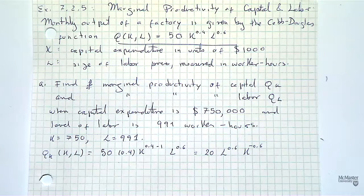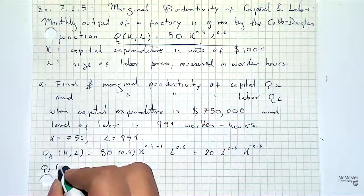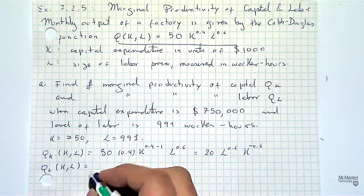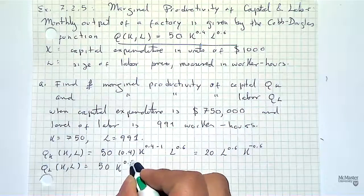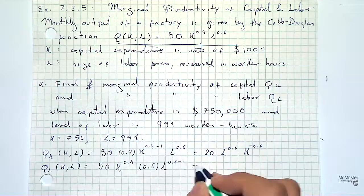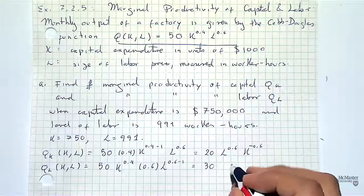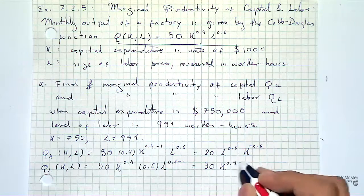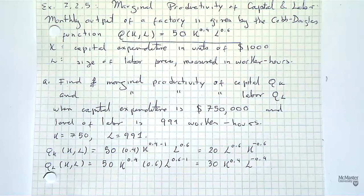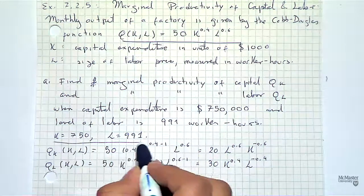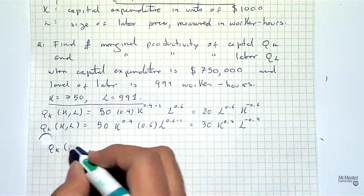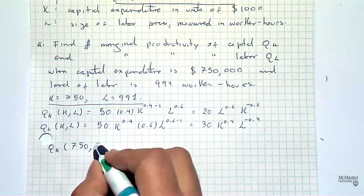For the partial derivative with respect to K, L is treated as a constant and K is the variable. Using the power law, you get 0.4 times K to the 0.4 minus 1, and L is a constant. So you'd have 20 times L to the 0.6 times K to minus 0.6. For the partial of Q with respect to L, K is a constant, so you apply the power law to get 0.6 times L to the 0.6 minus 1, giving 30 K to the 0.4 L to minus 0.4.